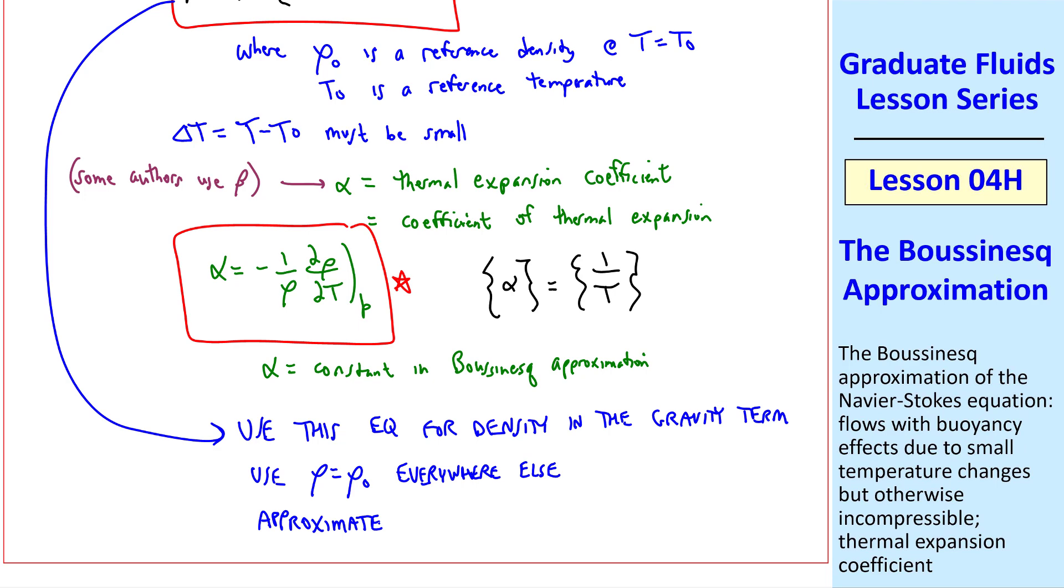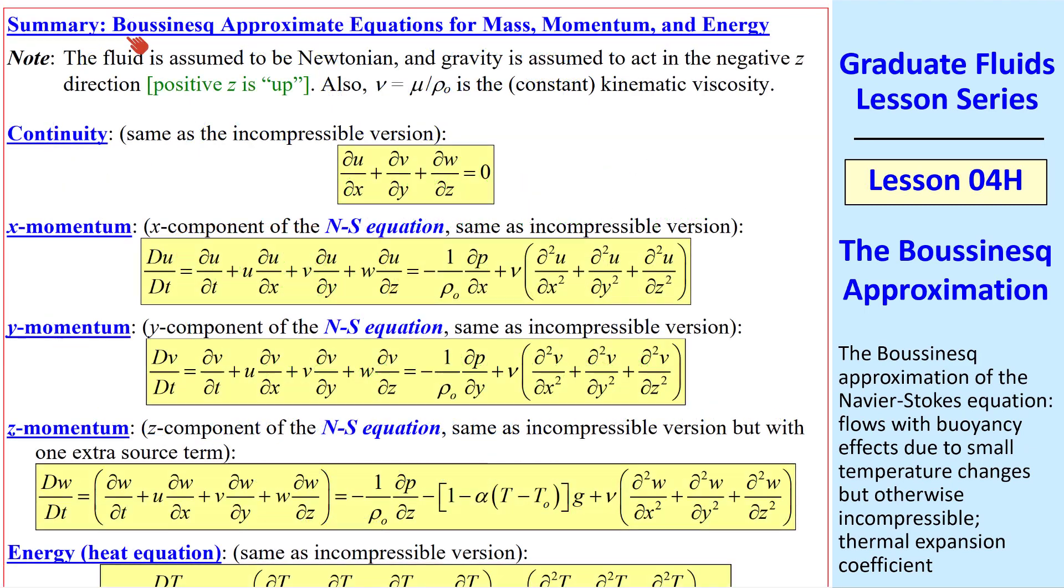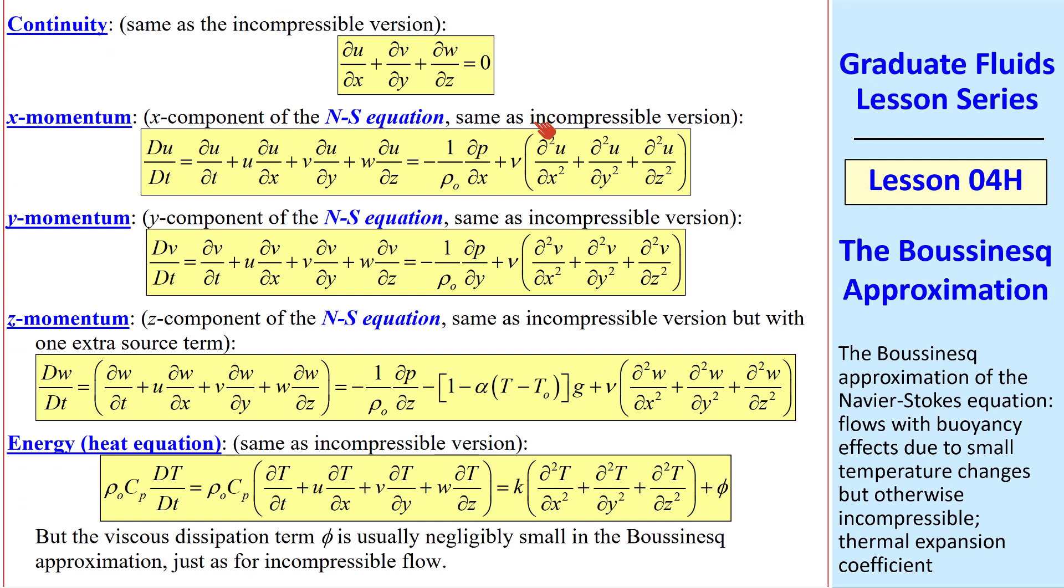Here's a summary of the Boussinesq Approximation for our mass, momentum, and energy equations in Cartesian coordinates. We make our typical assumption that z is up, so gravity acts down in the negative z direction. Continuity is the same as the incompressible version, since density doesn't even appear. X-momentum is also the same as the incompressible version, except that we have rho naught as the constant density.